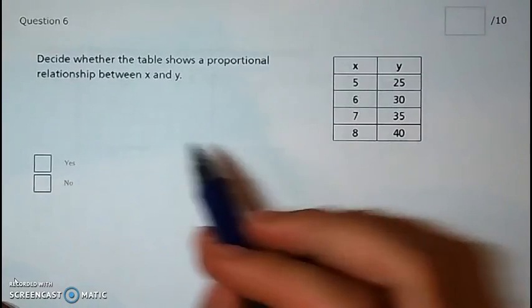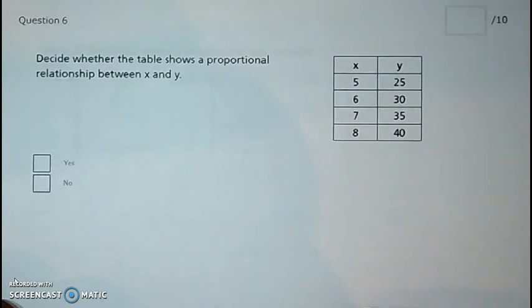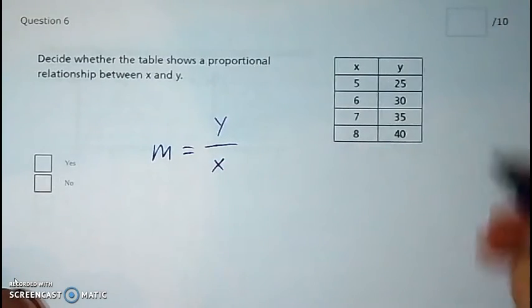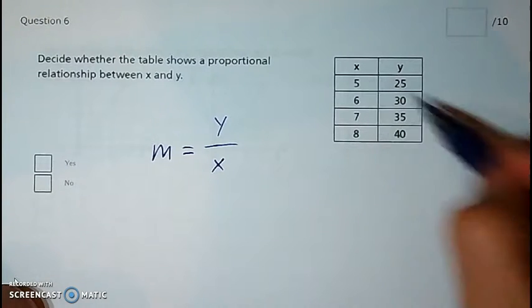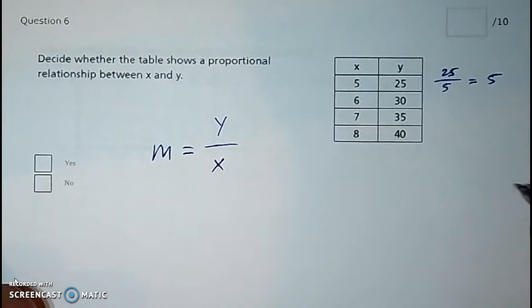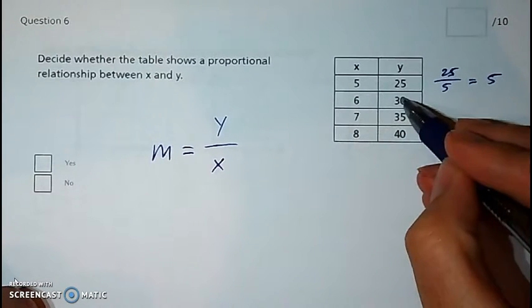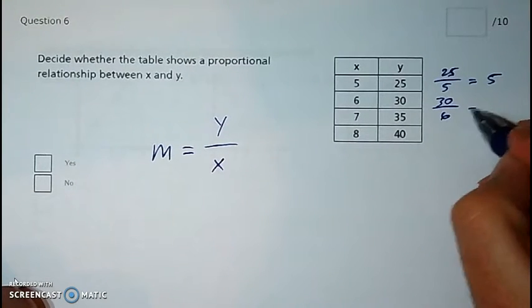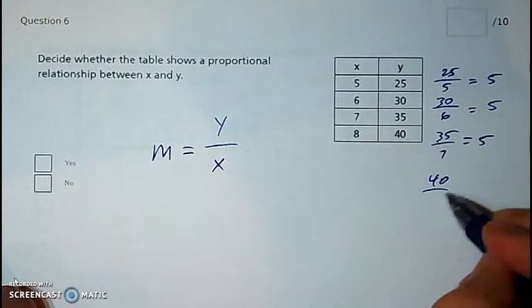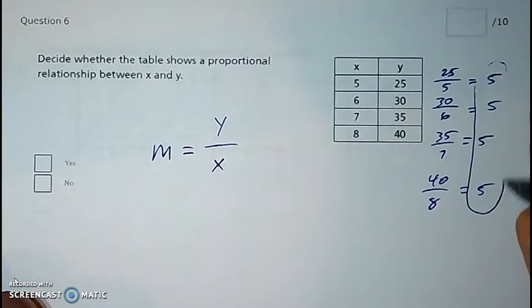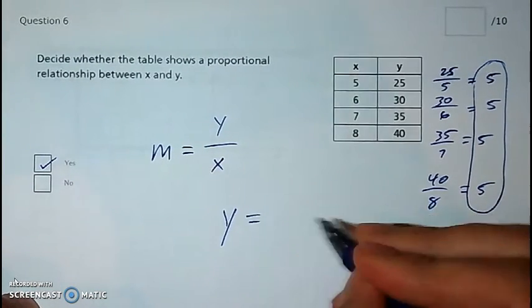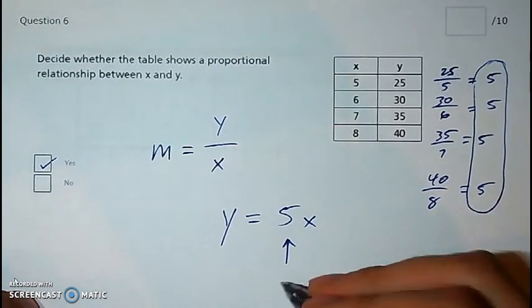Same situation here. Decide whether this table shows a proportional relationship. Y divided by x is the constant of proportionality, that's what m is. Take 25 divided by 5, which gives us 5. We want to see if that works for the entire table: 30 divided by 6 is 5, 35 divided by 7 is 5, and 40 divided by 8 is 5. Therefore, since these numbers are the same throughout, this is a proportional relationship — that's your unit rate, your constant of proportionality, m.